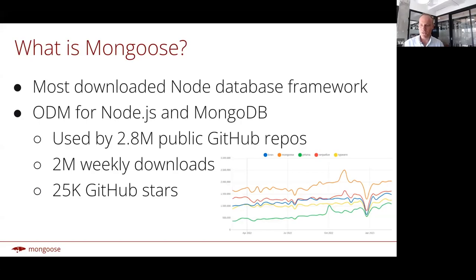So what is Mongoose? I like to describe it as the most downloaded database framework for Node.js. It's an ODM for Node.js and MongoDB. Some high-level stats: according to GitHub, Mongoose is used by about 2.8 million public GitHub repos, which is pretty extraordinary. We get about 2 million weekly downloads and about 25,000 GitHub stars.